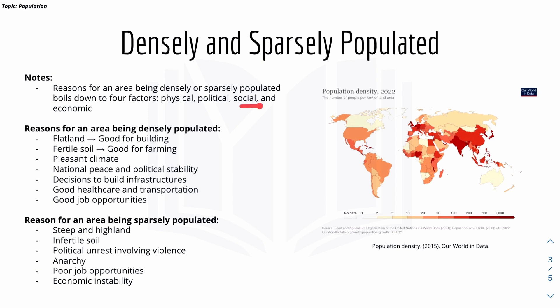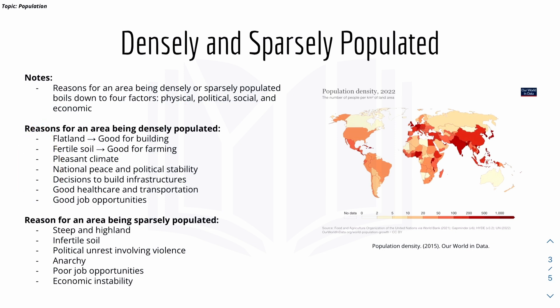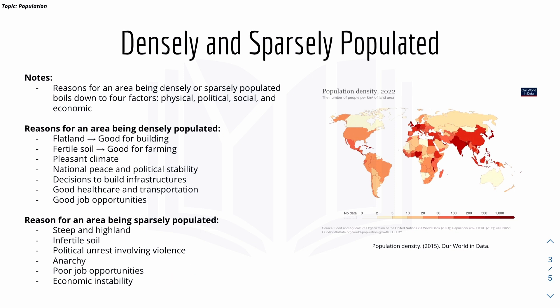Moving on to sparsely populated areas, the factors are basically the opposite. Instead of flat land, the terrain is steep with infertile soil. Politically there is unrest and violence. Economically there are poor job opportunities and economic instability — all of which push people away.